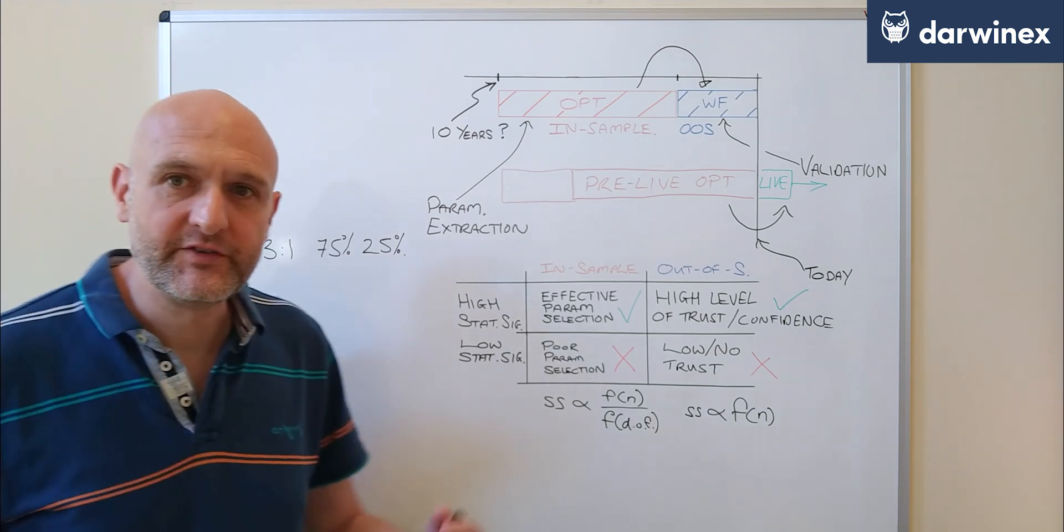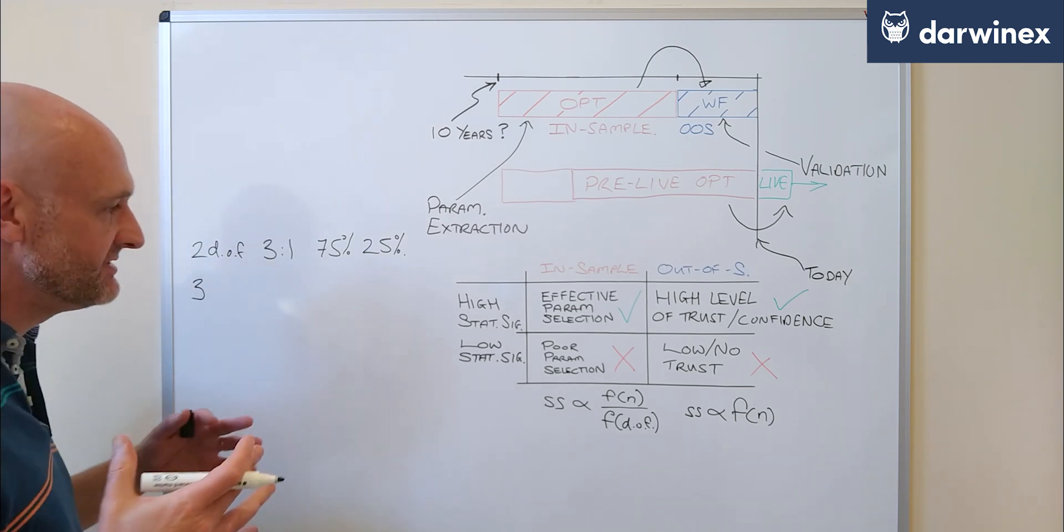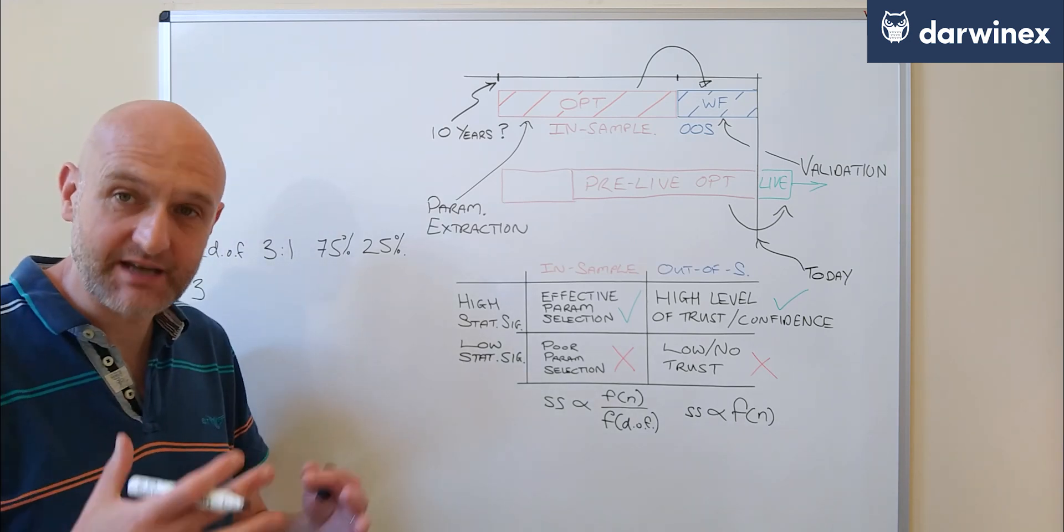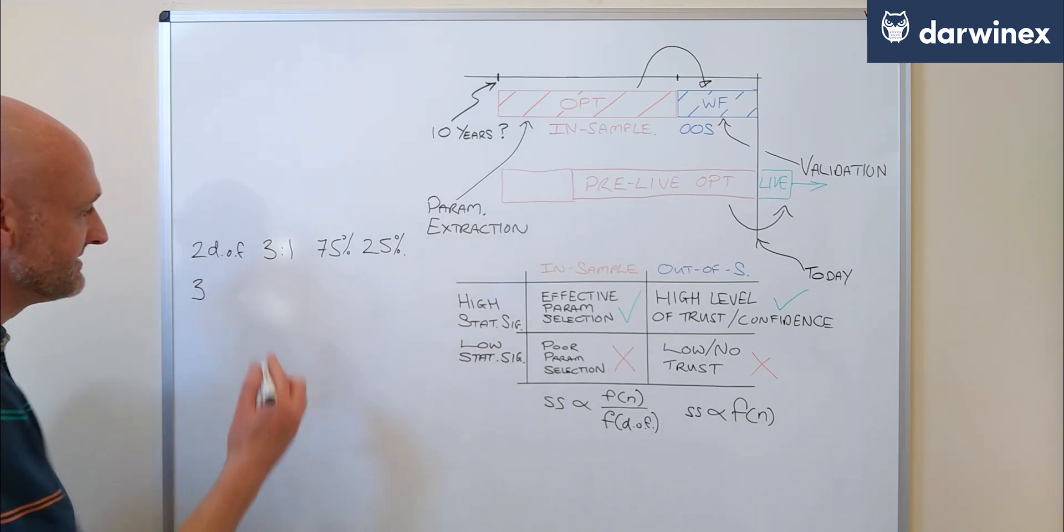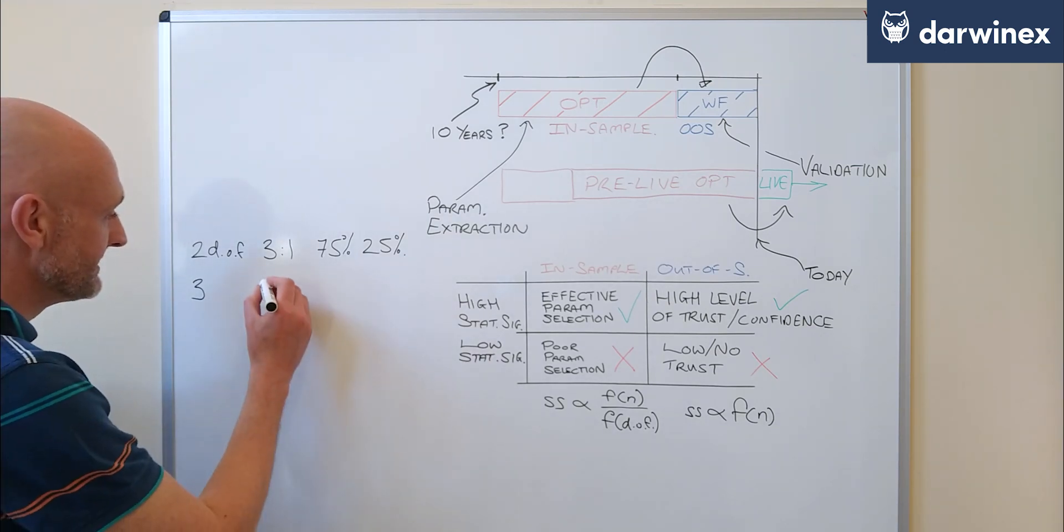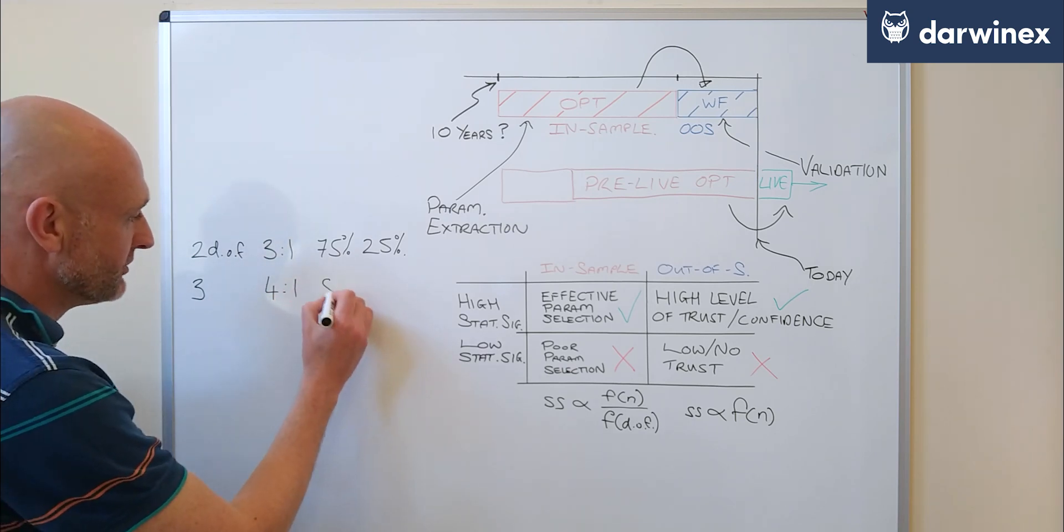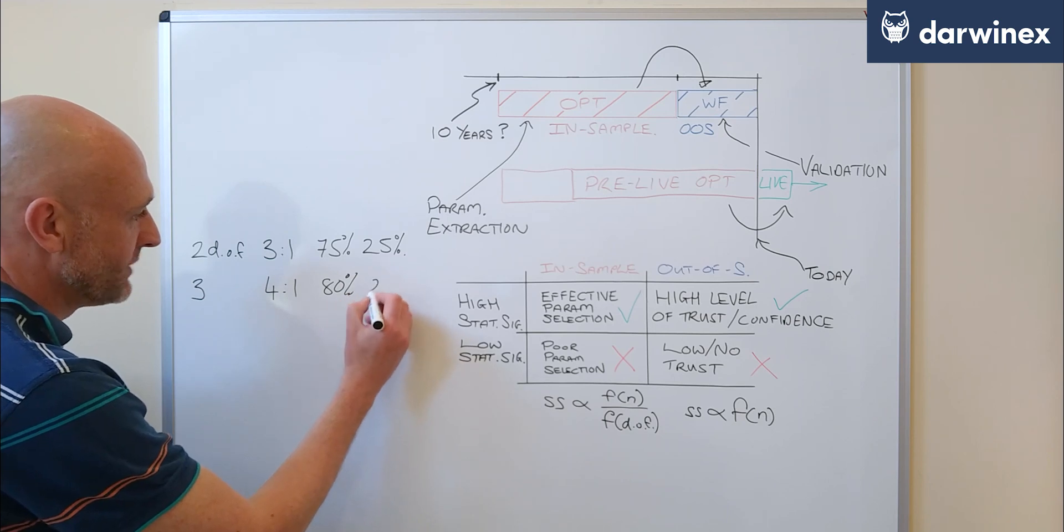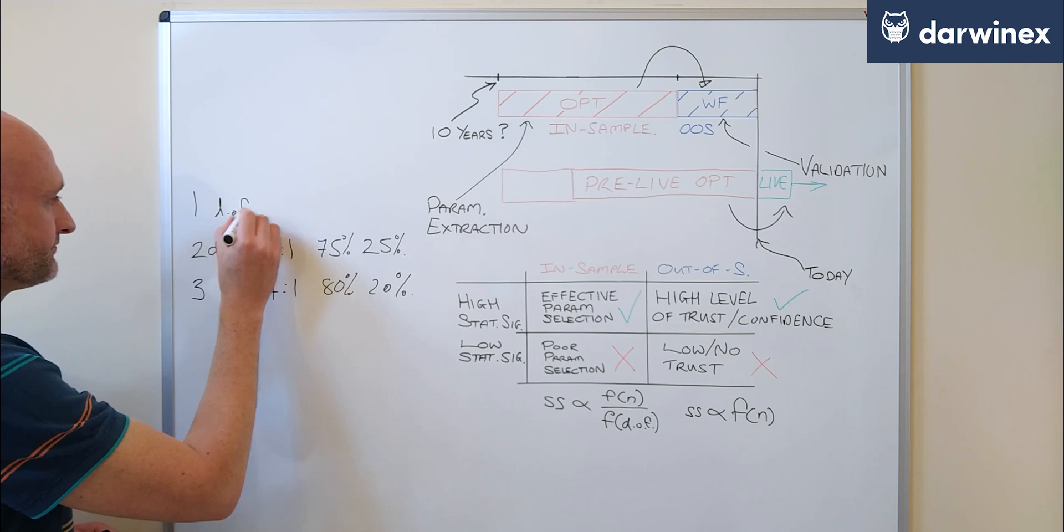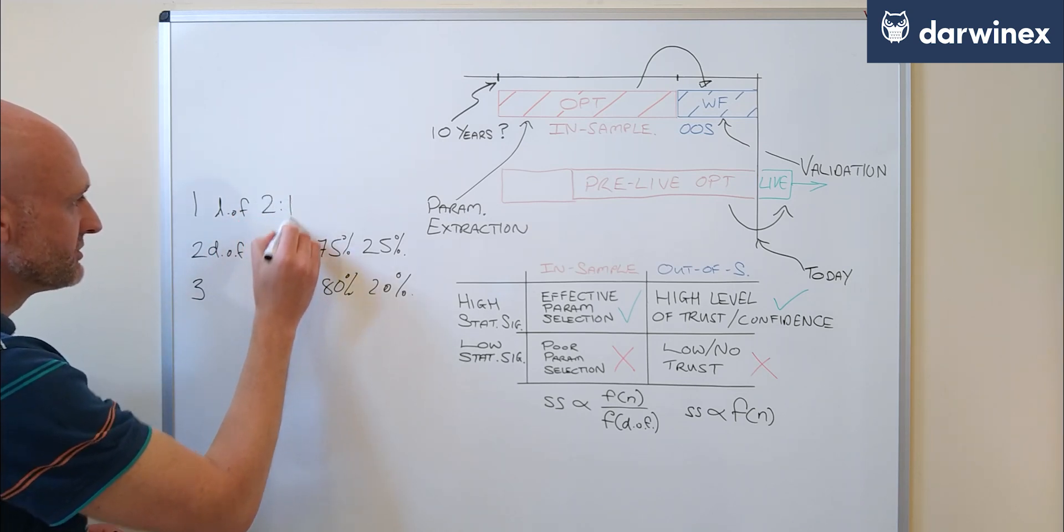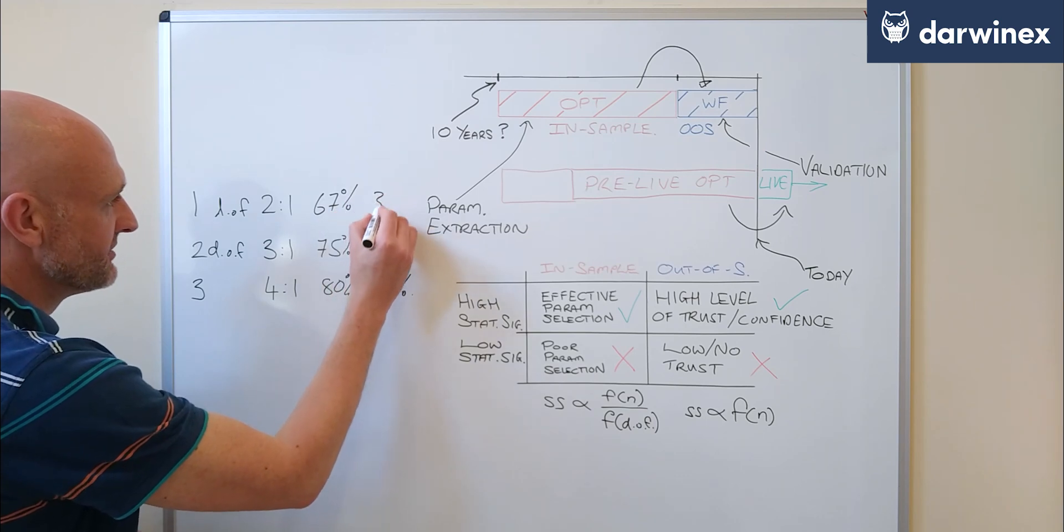Now, as I said before, if you increase your degrees of freedom to let's say three, this means you need to increase the size of your in-sample phase in order to maintain the level of statistical significance that you need. So here I tend to use four to one, which of course is 80% and 20%. Now, if you go down to just one degree of freedom, what I tend to use is two to one. And so here you're looking at 67%, 33%.